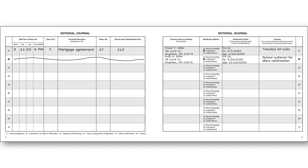Can I notarize for a spouse if there is no financial interest? The way the law reads, you cannot notarize if either you or your spouse has a direct or a financial interest in the document. If you benefit directly or financially, you can't notarize. If your spouse benefits directly or financially, you can't notarize. If I'm named in a document, I have an interest — that's the way I always look at it.